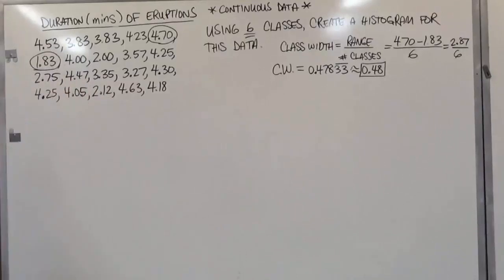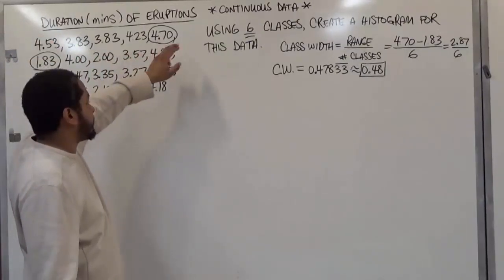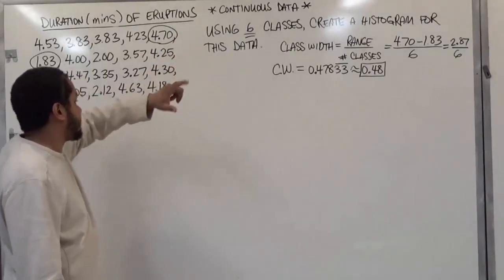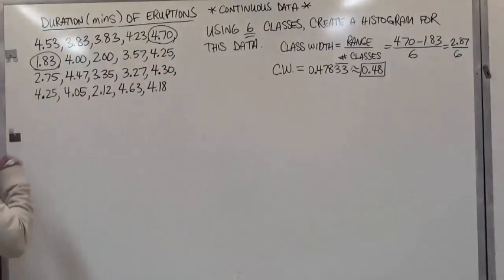Now that we have our class width, we're going to begin our class limits. And again, our class limits goes from the smallest number until we find a class that can fit the largest number. But in this case, we're just going to make 6 classes from the base number, which is 1.83.